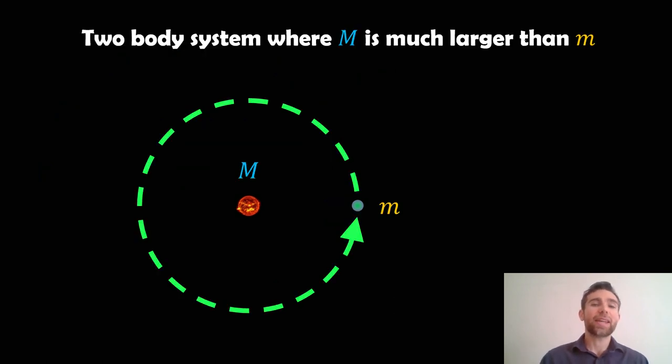So in a two-body system, again I'm using a central star as an example, you've got M, the blue M, and if it's much larger than the other mass, the orangey colored lowercase m, you've got two masses in this system.